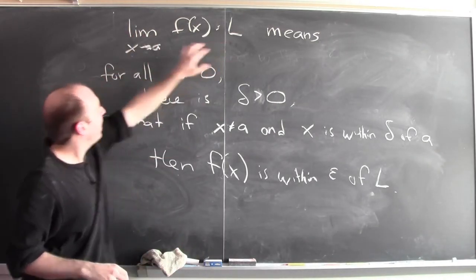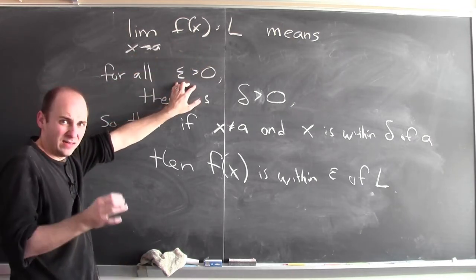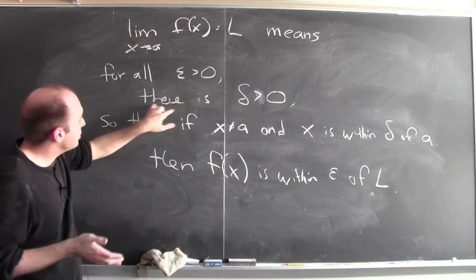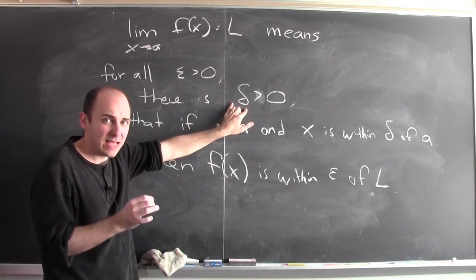To say that the limit of f(x) equals L as x approaches a means that for all numbers epsilon—epsilon is measuring how close I want f(x) to L—then there's some corresponding number delta, which is how close x has to be to a.